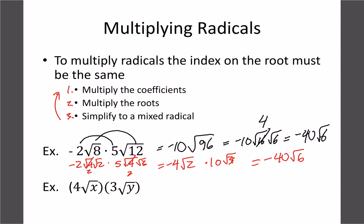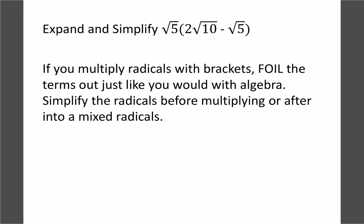Variables follow the same rules. For example, 4 times 3 is 12, and x times y under the radical is just root xy.